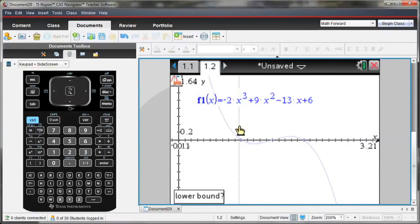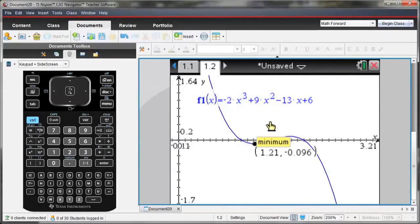I'm going to drag the lower bound so it's just to the left of my minimum, and then upper bound so it's just to the right of the minimum. And you notice that as I did that, the X and Y value for that minimum point showed up on the graph.